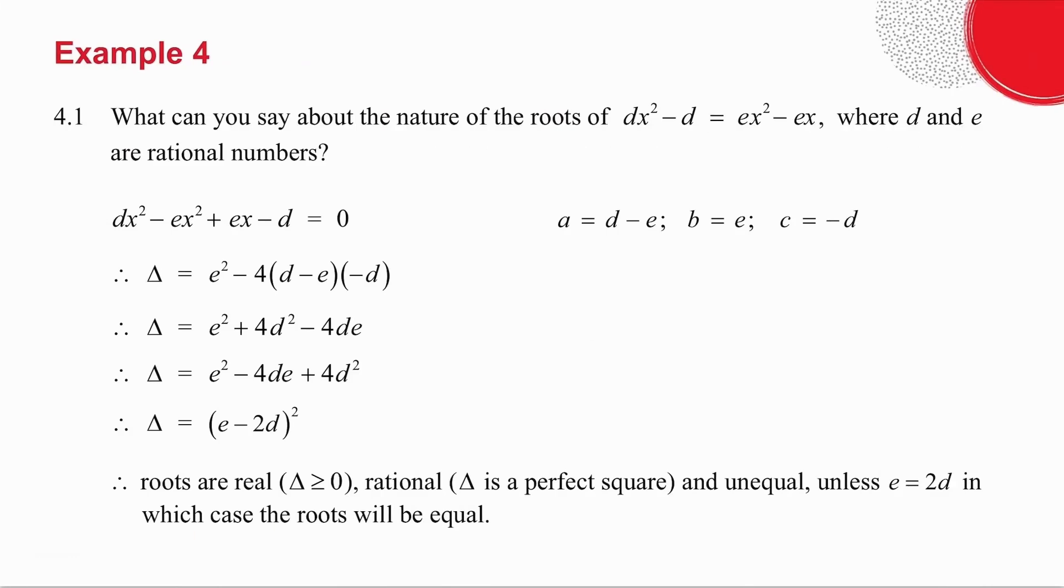The first thing I do in 4.1 is I write my equation in standard form. A is the coefficient of any x² term. B is the coefficient of any x term, and c is any constant. I then get delta, which is b² - 4ac. I multiply the brackets. I change the order so that it's written as a quadratic. And I then factorize. And that can be written as (e - 2d)².